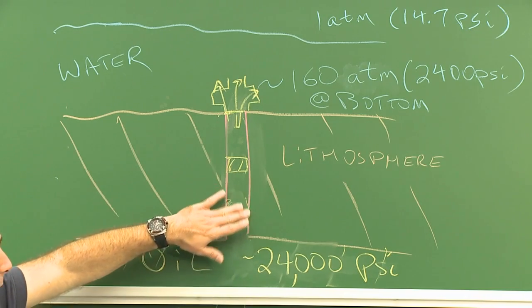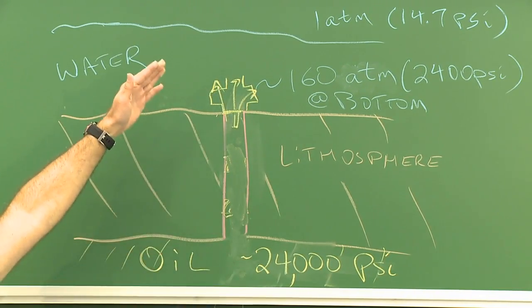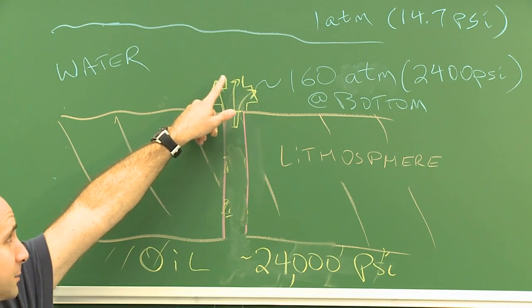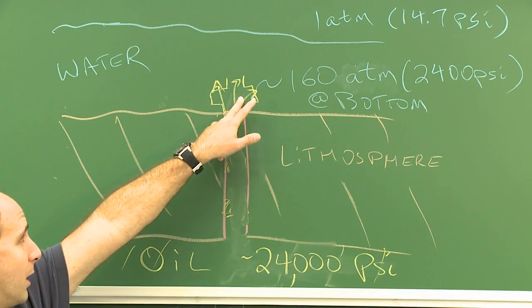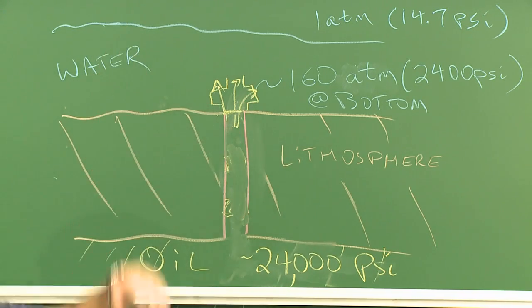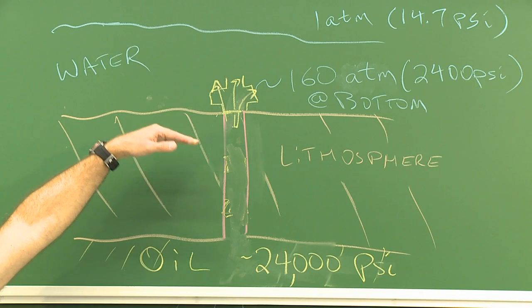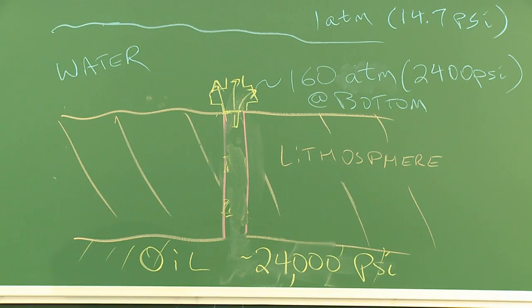And so the plugs failed, and then the methane leaked out. This failed as well, sort of a combination of failures. And the blowout preventer failed, and then methane gas rose above, it's lighter, less dense than water, so it rose, and then an explosion ensued on the platform.